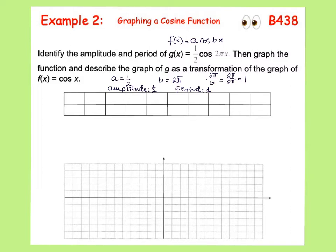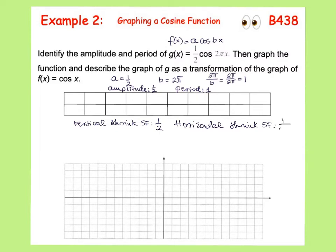Now let's talk about the transformation. We have a vertical shrink by a scale factor of one-half, and we also have a horizontal shrink by a scale factor of one over two pi. Since pi is 3.14, two pi is 6.28, so this function really is one-half times cosine of 6.28x. Since we are multiplying by a number greater than one, the scale factor would be the reciprocal — that's why we say it's a horizontal shrink by a scale factor of one over two pi.